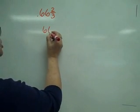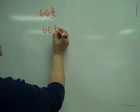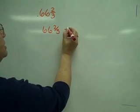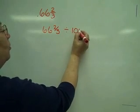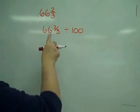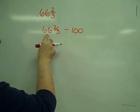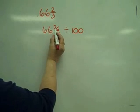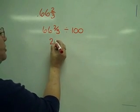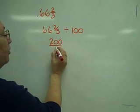So what I have is just by definition, this is 66 and 2/3 divided by 100. Okay, I'm going to change this to an improper fraction. So 3 times 66 is 198, plus 2 gives me 200 over 3.